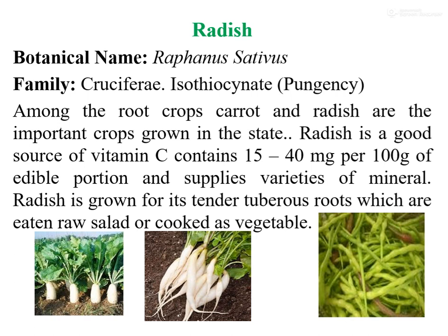Among root crops, carrot and radish are the two most important root crops in our state. Radish is a good source of vitamin C, containing 15 to 40 mg per 100 g of edible portion. It also supplies different types of minerals. Radish is grown for its fleshy tuberous roots, which are eaten raw in salads or cooked as a vegetable. Not only its roots but also its leaves and pods are used for cooking purposes.